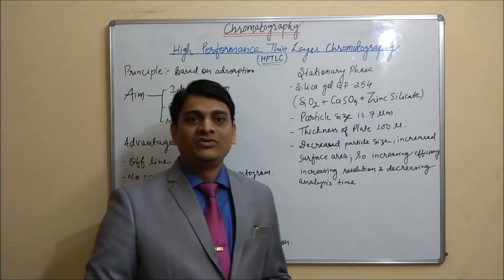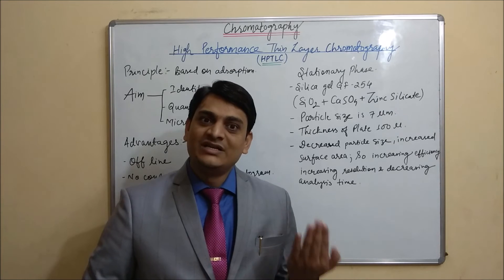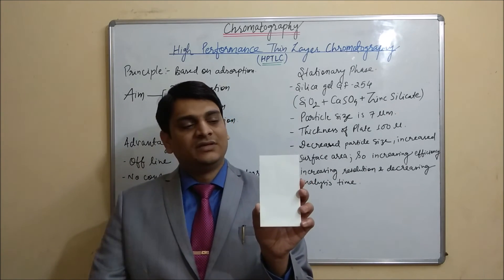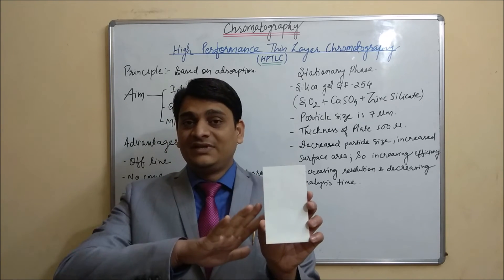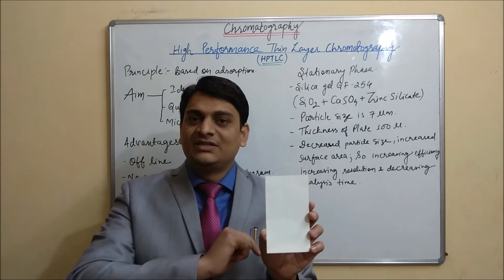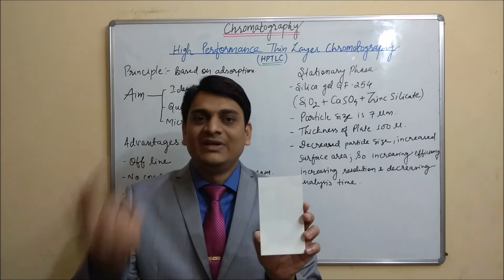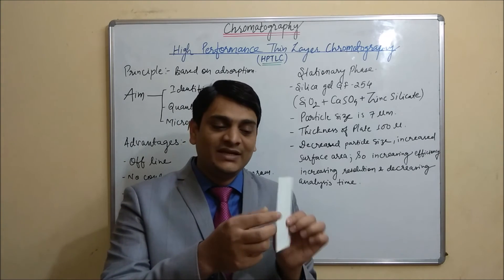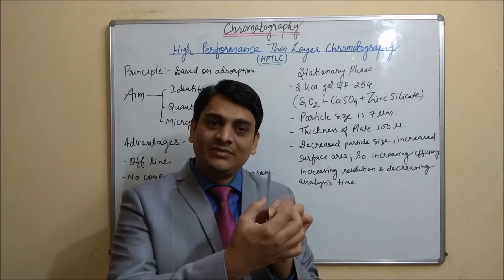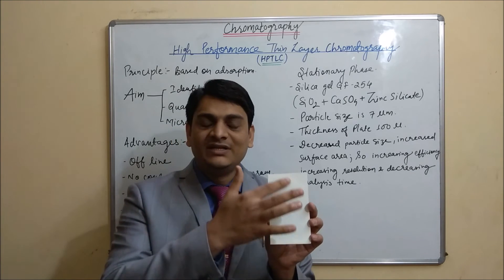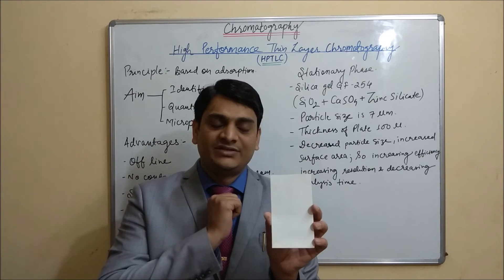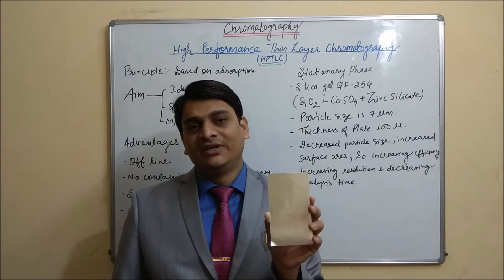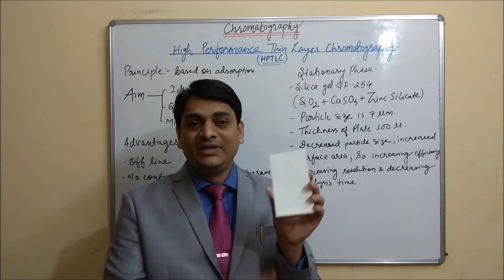Now I am showing you the HPTLC plate. Physically there is no difference between an HPTLC plate and a TLC plate when observed with the naked eye, but there is a difference in particle size and plate thickness. From the front it is silica gel GF254, which is the stationary phase, and from the back side there is an aluminum supporting material.